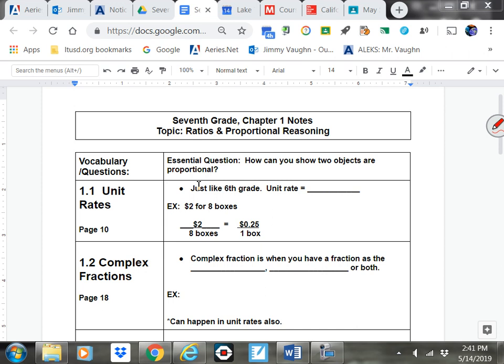Lesson one is on unit rates, just like sixth grade. A unit rate means per one, per one unit. And in seventh grade they just take it to the next level where you're working with fractions and decimals. So this example here says two dollars for eight boxes. You set it up like we did in the sixth grade material - two on the top, set up like a proportion or a rate. Two dollars per eight boxes. You divide the top and bottom by eight to get to one box on the bottom. And two dollars divided by eight is 25 cents.